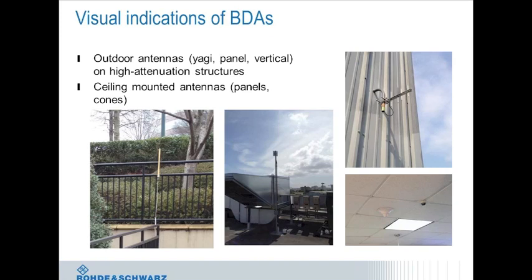There are many visual indications of BDA presence. A BDA requires a donor antenna pointed at the base station and a serving antenna for the indoor area. The presence of directional antennas such as Yagis or panels on the outside of a building could indicate a BDA installation — particularly for structures with very high attenuation like concrete or sheet metal buildings. Serving antennas inside buildings are usually ceiling-mounted dome or panel antennas, though these can be tricky to recognize.